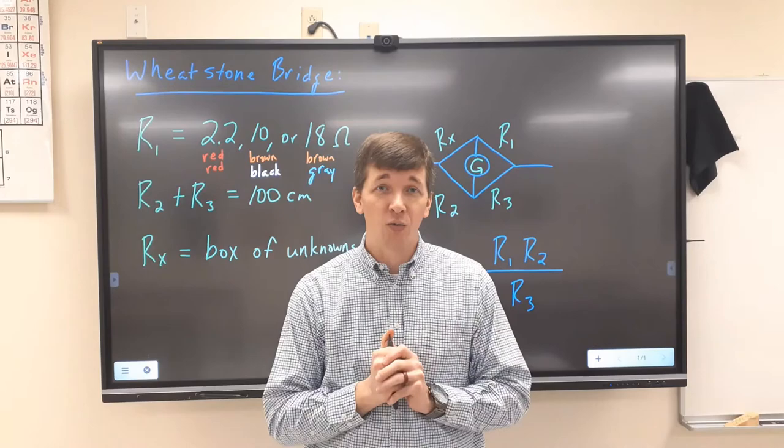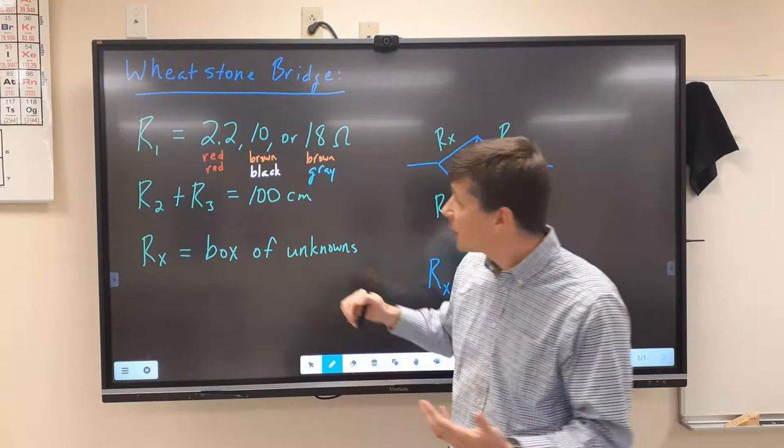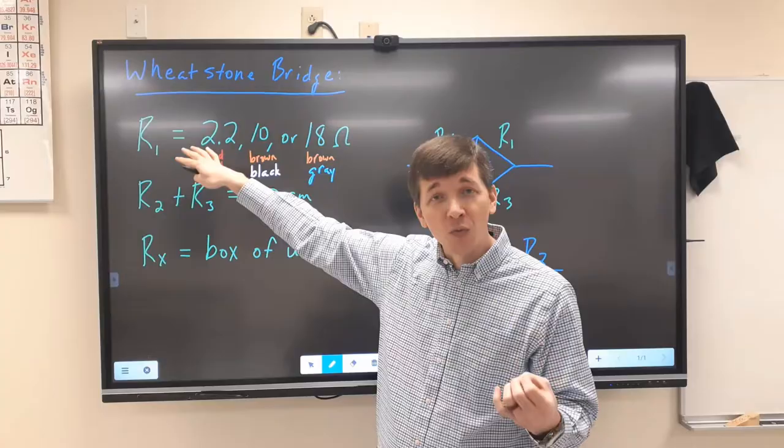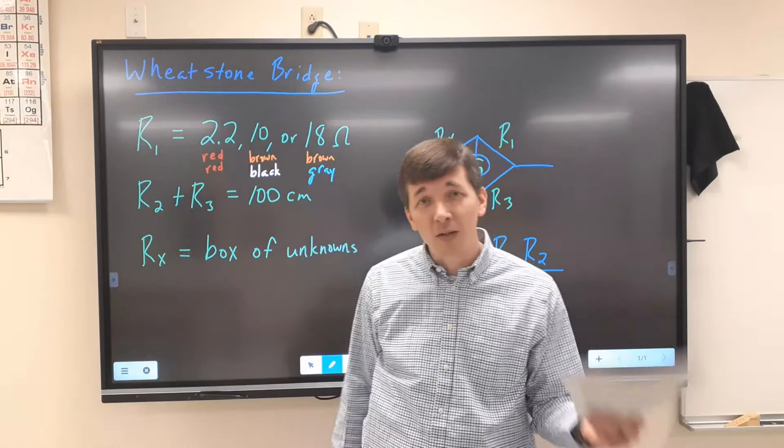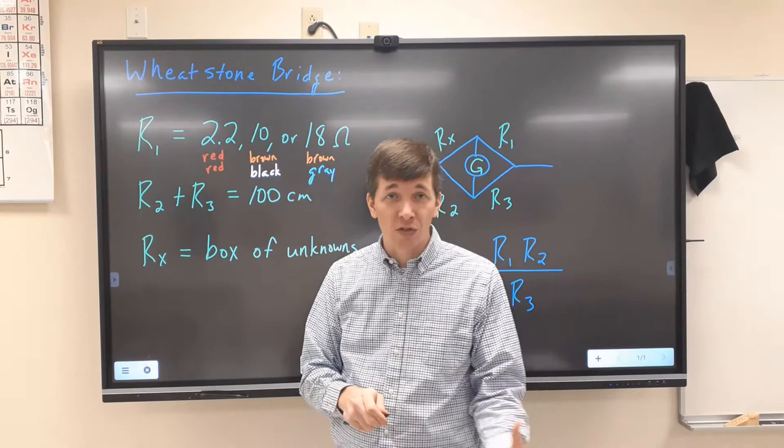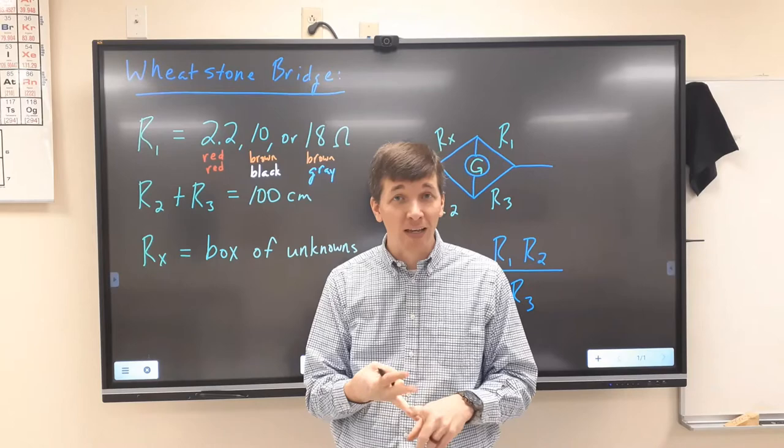There are some diagrams on the board behind me that I'm going to explain. Your known resistor is going to be labeled as R1 in your diagram. If you haven't done it already, go ahead and print off your lab handout. R1 is going to be a known resistor, and we're going to have three different options: a 2.2 ohm resistor, a 10 ohm resistor, and an 18 ohm resistor.